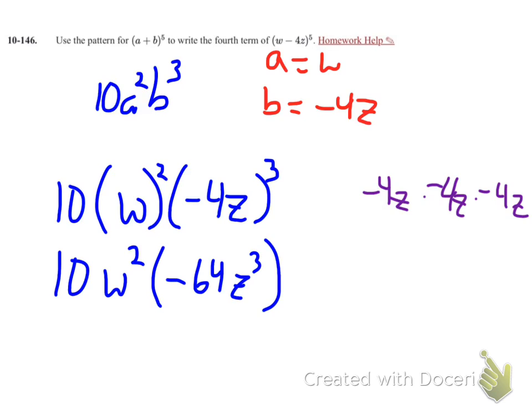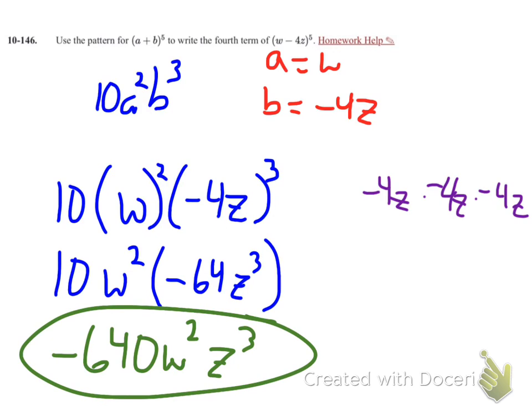I'm actually going through and multiplying a negative 64 times 10. So my final answer for this problem is now a negative 640 for 10 times negative 64, w squared z to the third. Hope that helps.